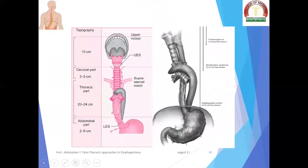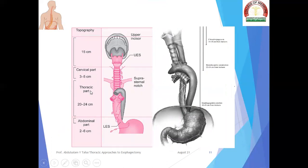The topography of the esophagus: the cervical esophagus begins 15 centimeters from the incisor teeth. The cervical portion is about 3 to 5 centimeters. The thoracic part is about 20 to 24 centimeters. The abdominal part is about 2 to 6 centimeters. Therefore, the entire adult esophagus is about 25 centimeters in total length.